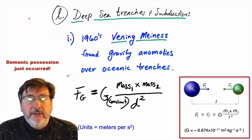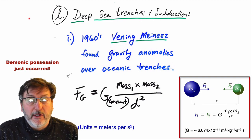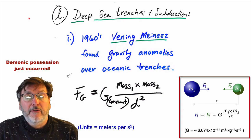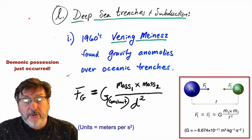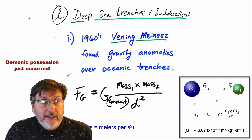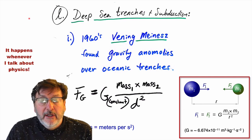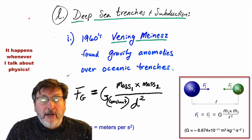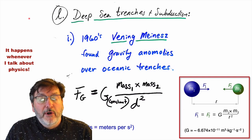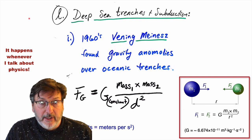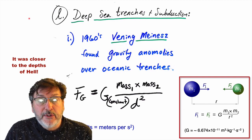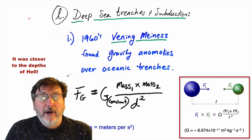Deep sea trenches have been known since at least the 1870s, discovered by the Challenger expedition, which used enough sounding rope to reach the bottom of the Marianas Trench in the Pacific — seven and a half miles below sea level. In the 1960s, the first scientific geophysical measurements of trenches occurred. Vinny Maynez found gravity anomalies over oceanic trenches — specifically the trench in the southeastern Caribbean where the Caribbean plate intersects the Atlantic plate. Nobody knew the origin of these deep zones. One technique he used was measuring the gravitational attraction of the earth.